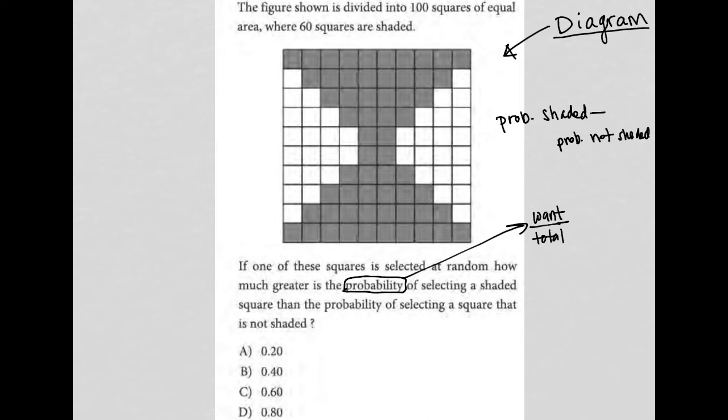For probability shaded, this is the shaded fraction. What I want is shaded. How many squares are shaded? There are 60 shaded, so that's what I want. Out of how many total squares are there? There are a total of 100 squares, so 60 divided by 100. Looks like all my answers are in decimal, so I'm going to convert 60 over 100 into 0.60. If you took your calculator and did 60 divided by 100, you get 0.60.